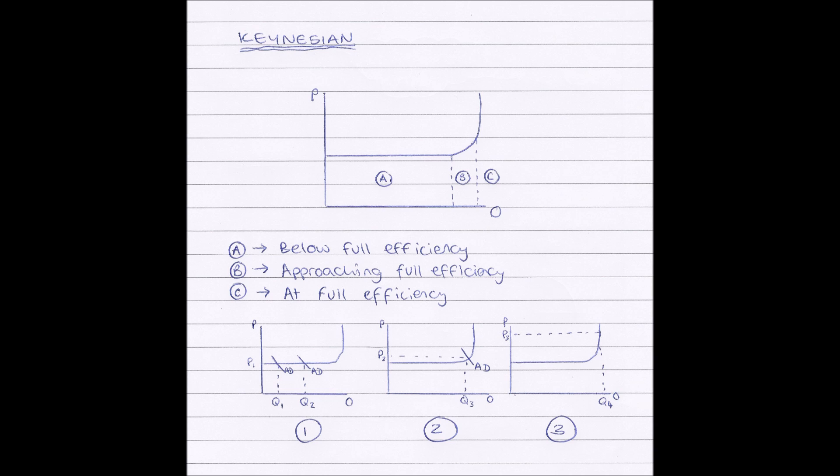So Keynesians believe that the long-run aggregate supply curve looks like this. It has three sections. We have below full efficiency, approaching full efficiency, and at full efficiency. And in the long run, the economy can work at any one of those points, depending on where aggregate demand is.